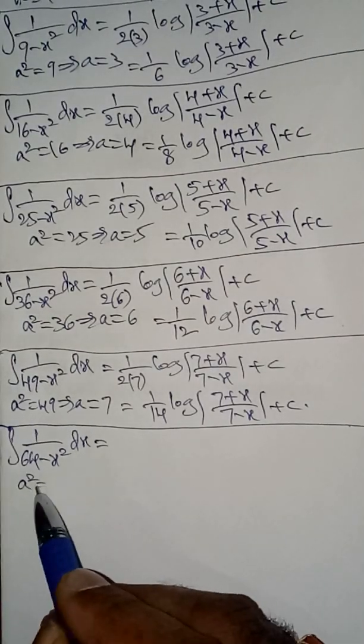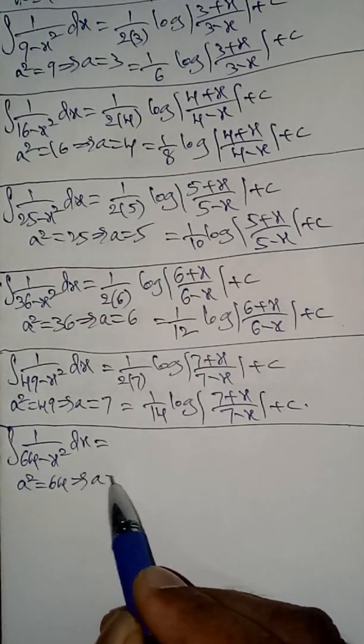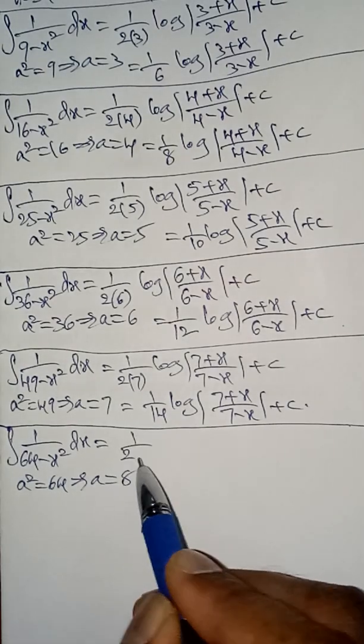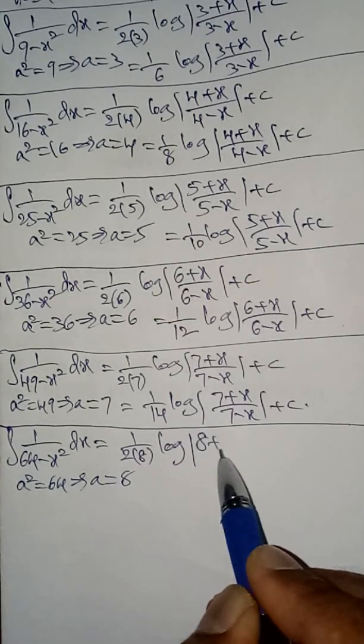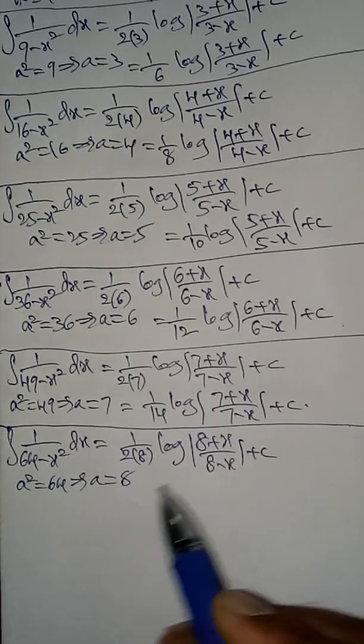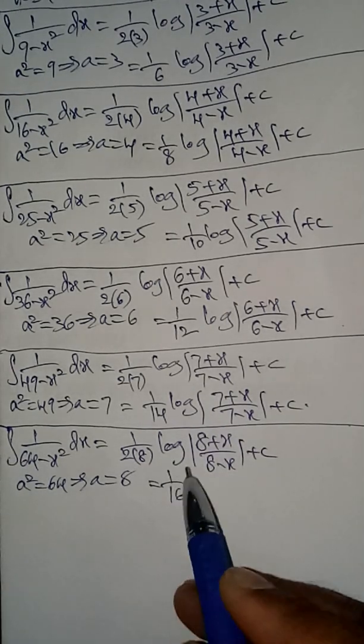After substituting formula: 1/(2a), a value 8, into log |a + x, 8 + x / a - x, 8 - x| + c. You can simplify. The answer is 1/16 into log |8 + x / 8 - x| + c.